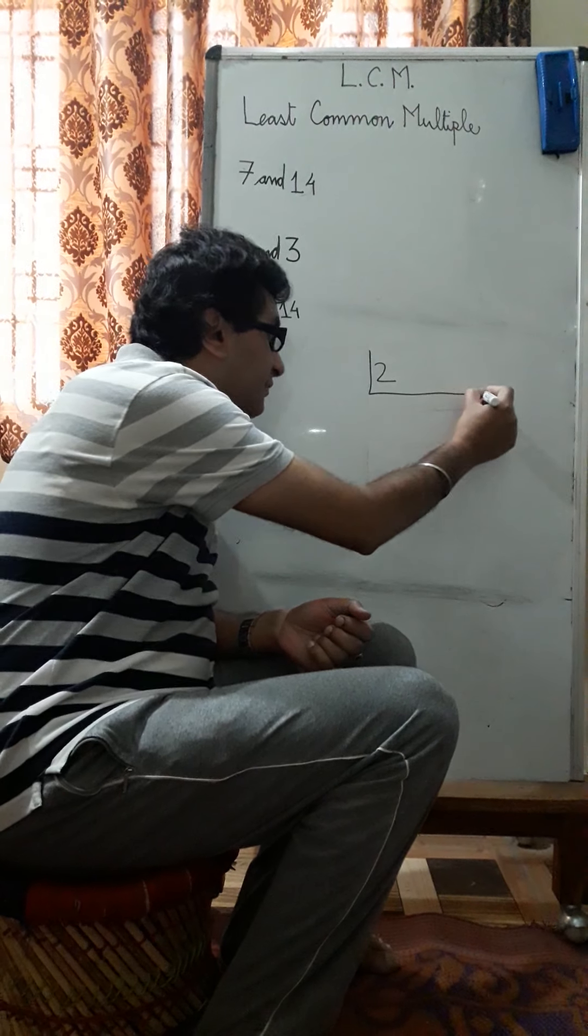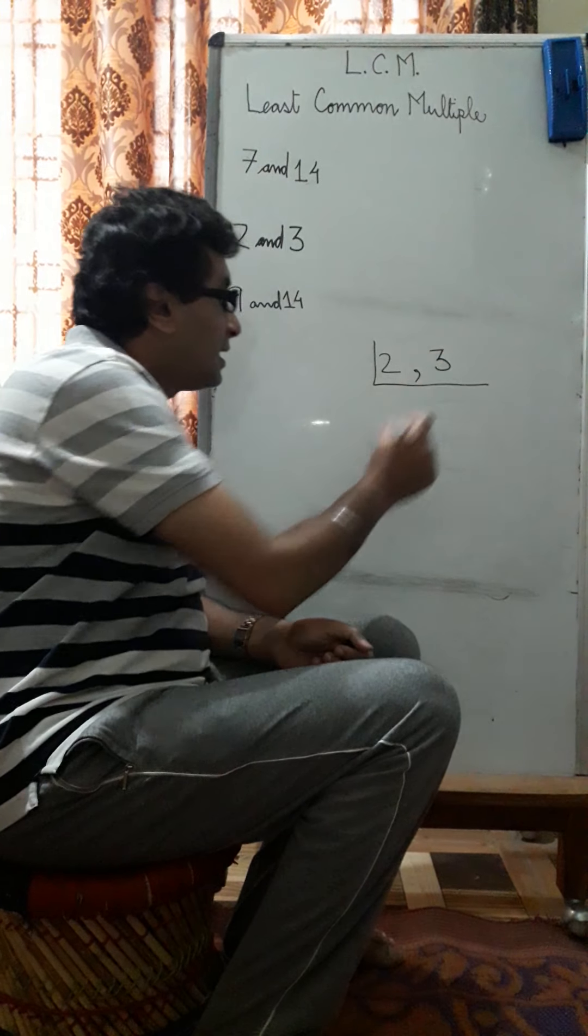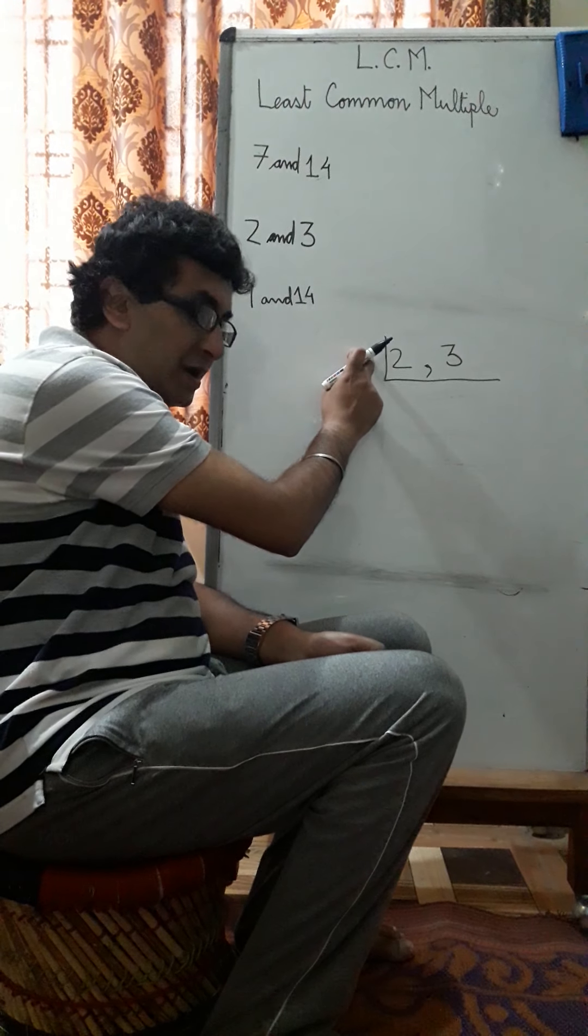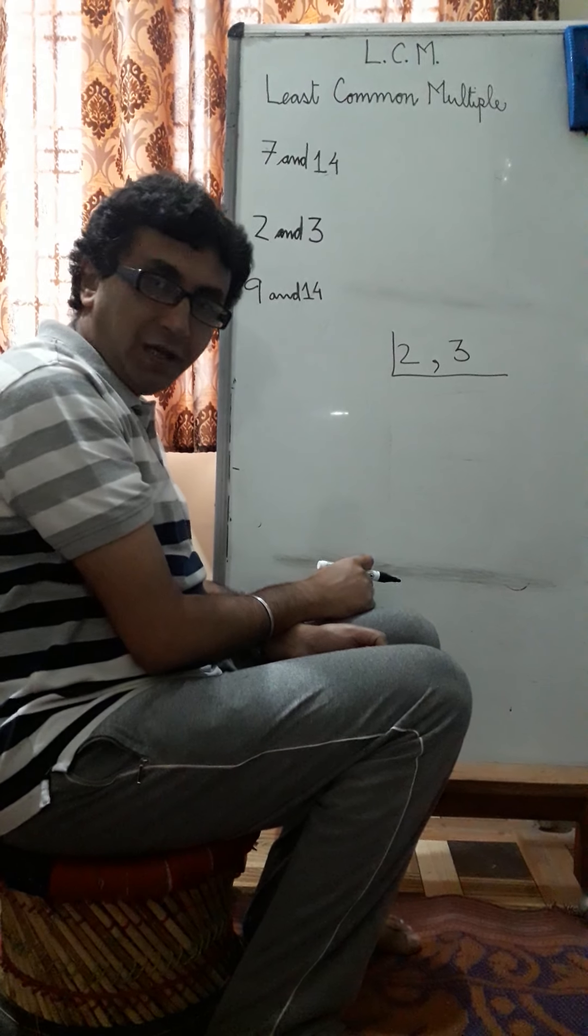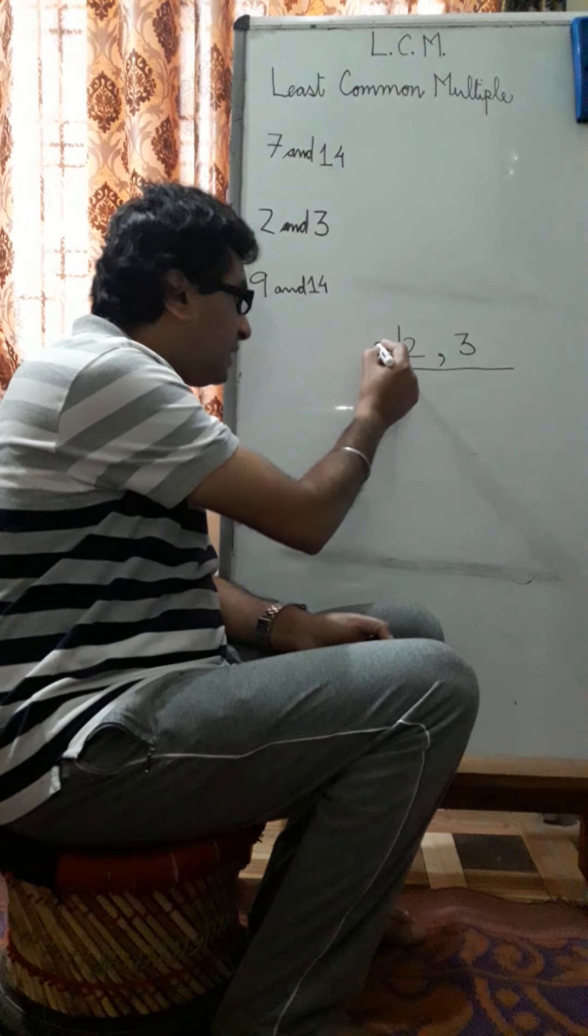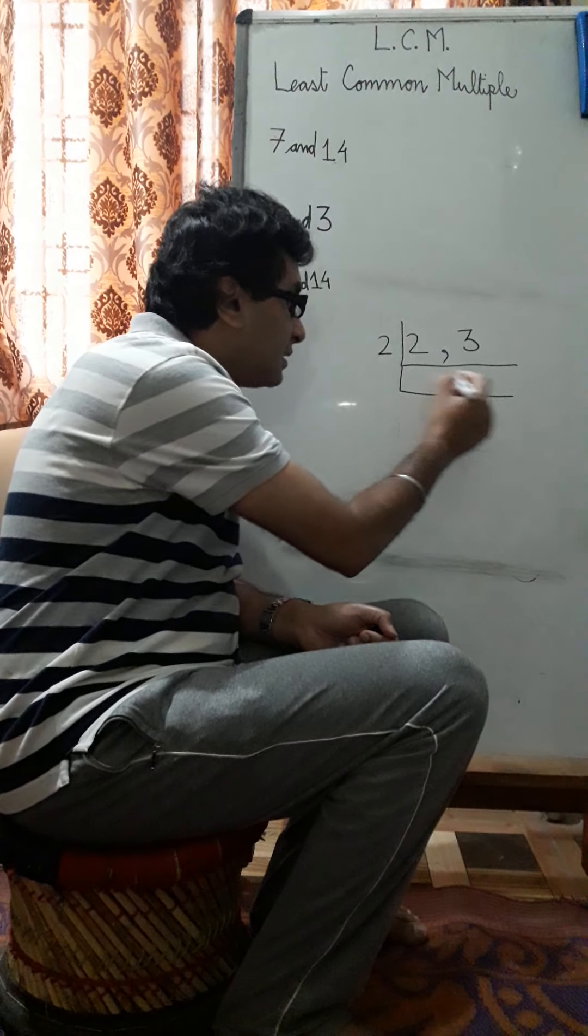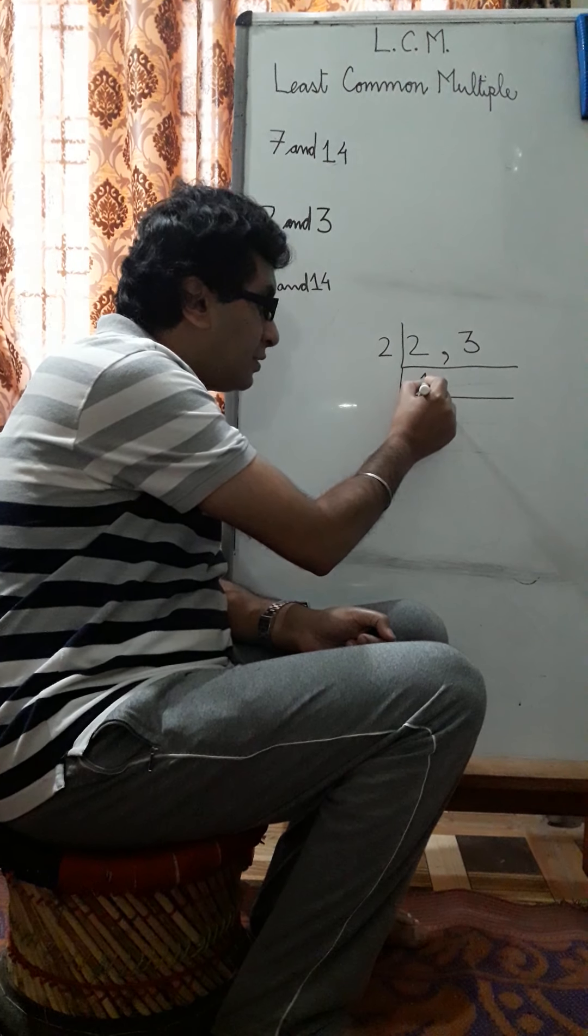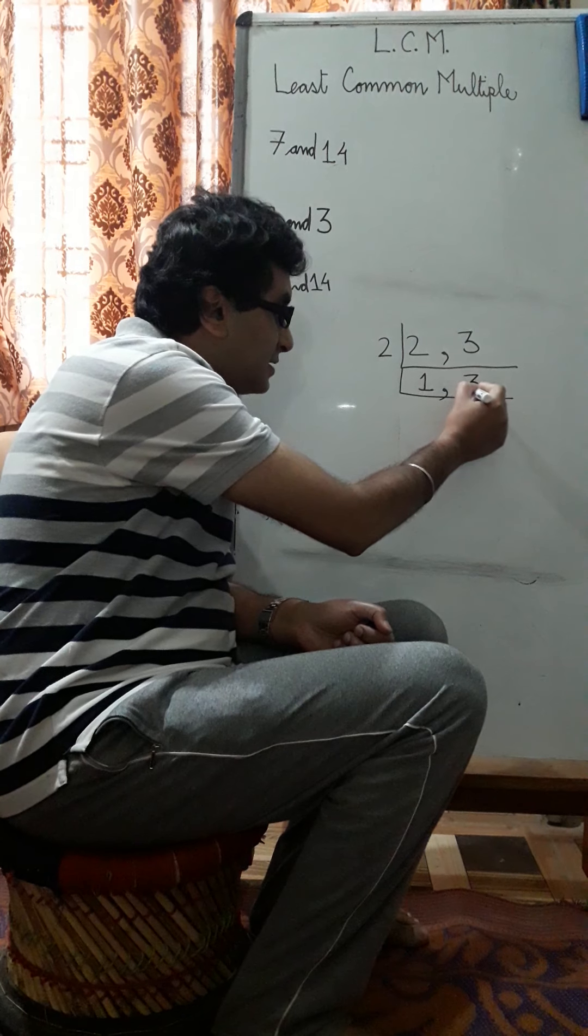So when we do a common division method, we do it like this. We put a 2, we put the 3, and then we take a prime factor or prime number which can divide any of these numbers without leaving a remainder. So let's, 2 will divide 2, yes? No remainder will be left. So you will write a quotient here. 2 into 1 is 2. 3 will come down as it is.